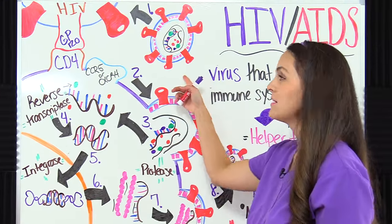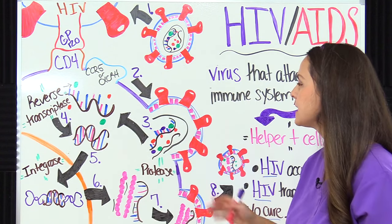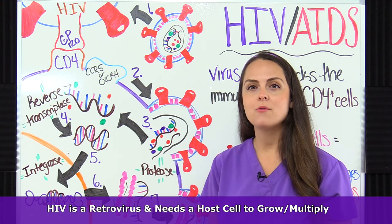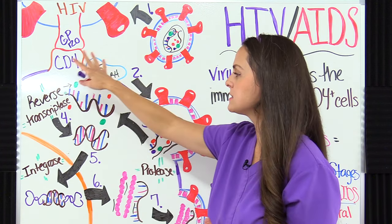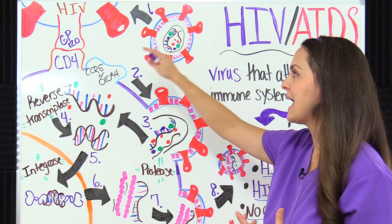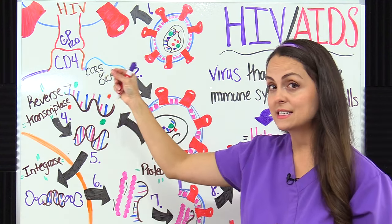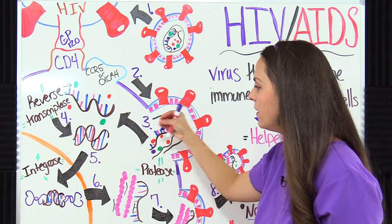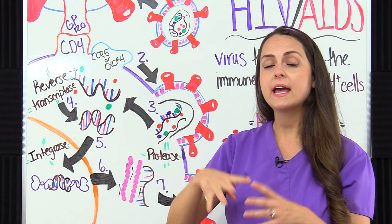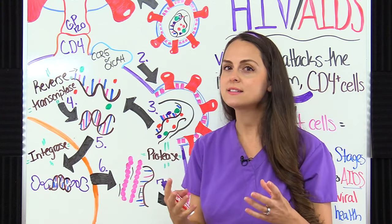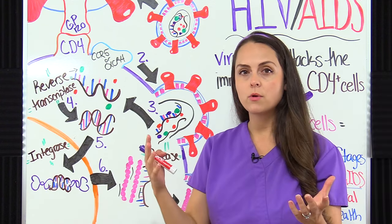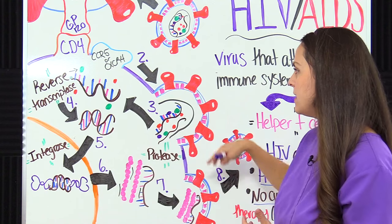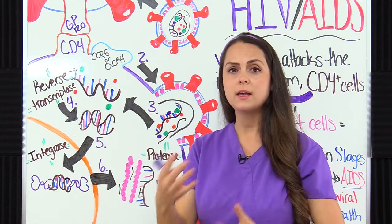Here I have a basic HIV virus and beside it is a helper T cell. The HIV virus is a retrovirus — it cannot grow or multiply without a host cell. The HIV virus loves cells that have a CD4 receptor on the surface because it can easily access that receptor. Once it attaches to that receptor, it gets inside the cell, then inside the nucleus where it takes over the cell's function and causes that cell to produce more HIV. Once it's done producing, it kills that cell, and all that fresh new HIV goes and repeats this cycle.